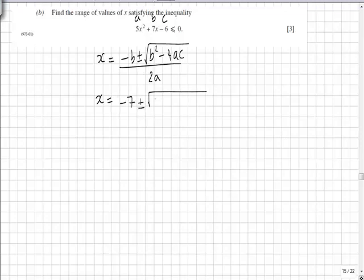So in this case, x equals minus 7 plus or minus the square root of 7 squared minus 4 times 5 times minus 6, all over 2a.